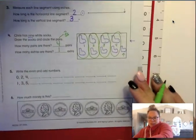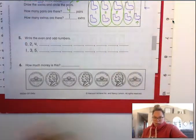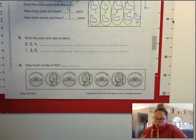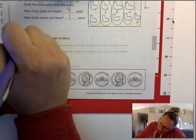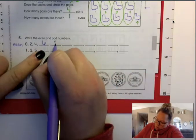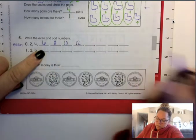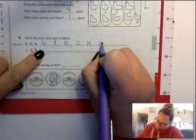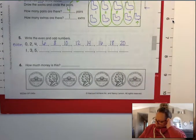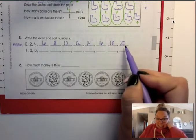Let's keep moving on here. I'm going to move this a little bit so it's easier for you to see it. Now number five says, write the even and odd numbers. So 0, 2, 4, those are our even numbers. 0, 2, 4, 6, 8, 10, 12, 14, 16, 18, 20. Yep, those are the even ones.